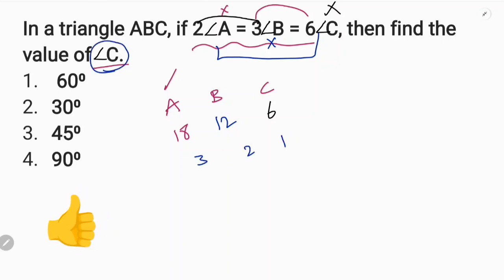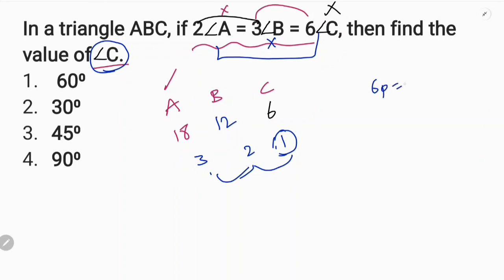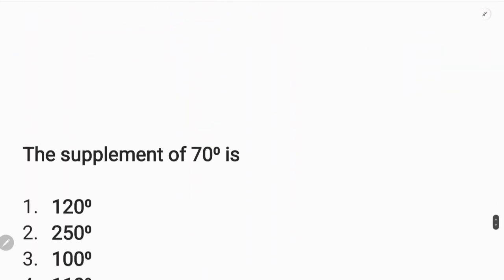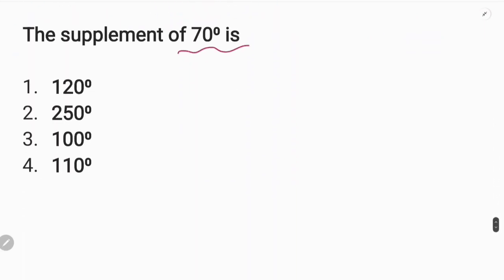Find the value of C and 1 part of the value of C. Sum of angles of a triangle is 180. 3 is 5 and 5 is 6. 6 parts are 180. 1 part is 3. I am going to add 2 parts of the value of C. Supplementary angle is 70 degrees. How is the supplementary angle? Supplementary angle is 80 degrees. Sum of 80 degrees is 180 degrees. Supplementary angle is 90 degrees.